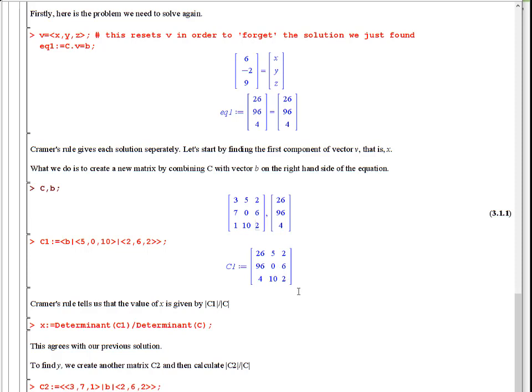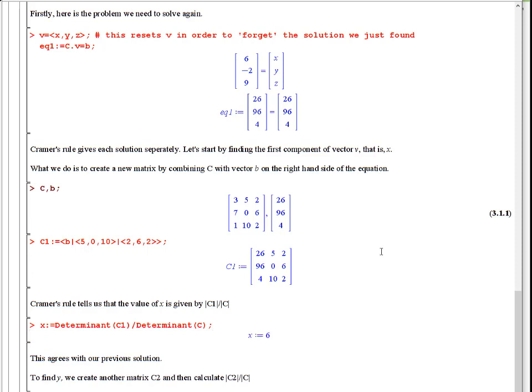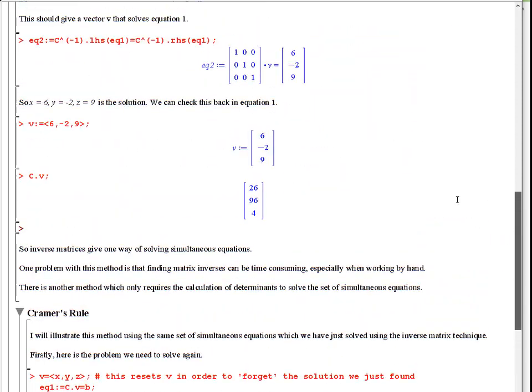And Cramer's rule tells us that you can get the value of x is simply the determinant of this matrix divided by the original matrix, so this divided by this. So calculating the two determinants, divide them, and you get six, which is the same as we've got up here for the solution.